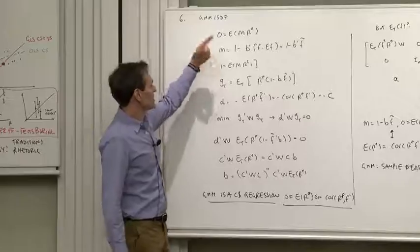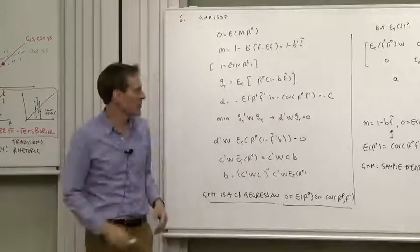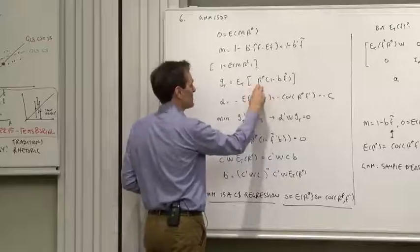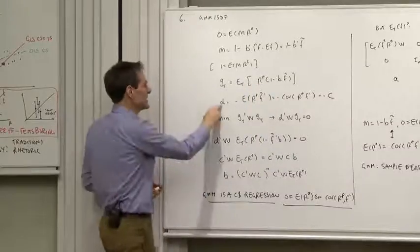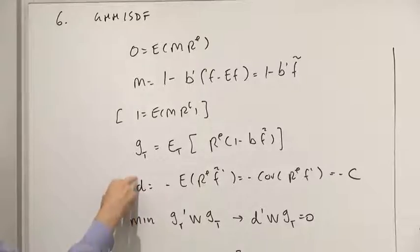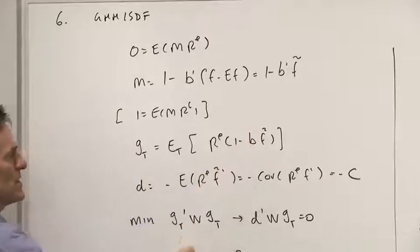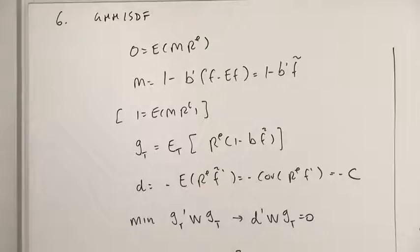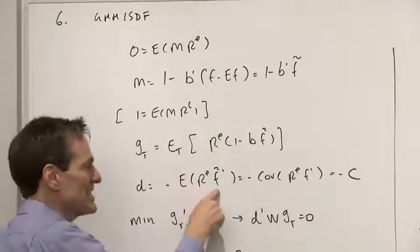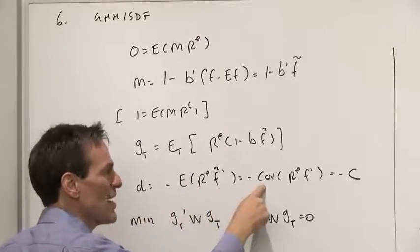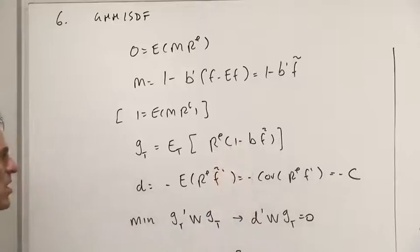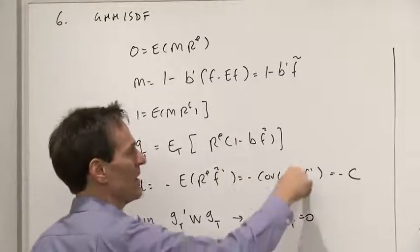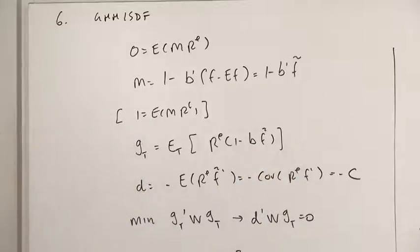Okay, there's our discount factor, there's our moments, GMM, here we go. The gt is expected m times r. The d matrix, the derivative of gt with respect to the factor b is just E of r times f, that's all that's left over. E of r times a demeaned f is the same thing as the covariance of r with f, so I'll call that c. That's a vector of covariances of each of the different returns with the factor.